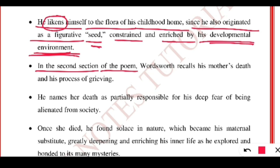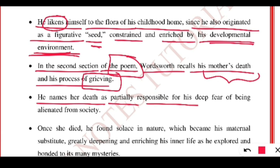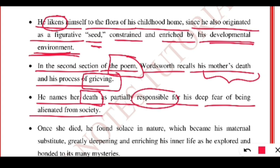In the second section of the poetry, Wordsworth recalls his mother's death and his process of grieving. He was very sad. He names death as partially responsible for his deep fear of being alienated from society, because death separates people from their beloved ones. That particular experience made him fearful of losing loved and dear people in his life.